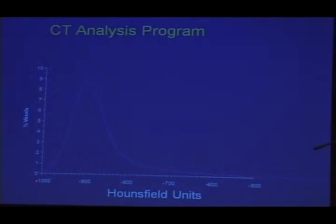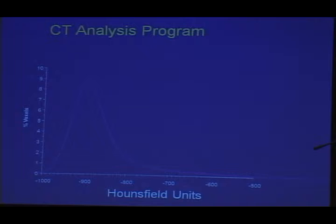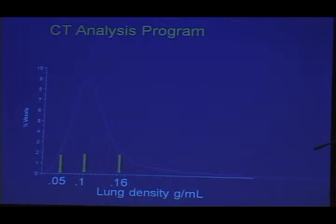Hounsfield units of minus 1,000 is the same density as air, and Hounsfield units of zero is the same density as water. The lung is made up of water and air, so its density is between air and water, and we can get a frequency distribution for all voxels. We can convert Hounsfield units into lung density, because all the CT scanner is measuring is density. So here would be lots of air and very little tissue — very emphysematous lung — and normal lung is around a density of about 0.15.